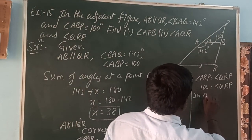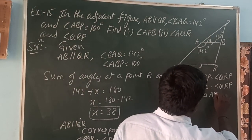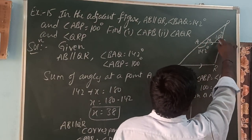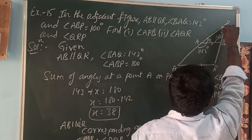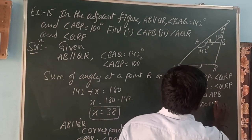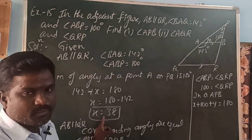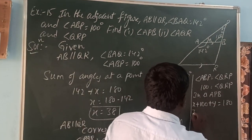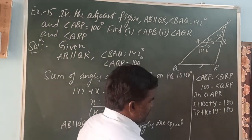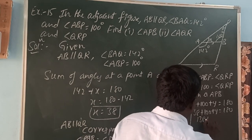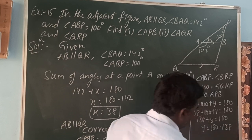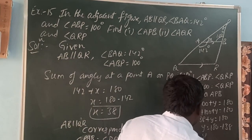In triangle APB, the sum of angles in a triangle is 180 degrees. The angles in triangle ABP are: angle ABP, angle PAB which is X equal to 38, and angle APB which we call Y. So, X plus 100 plus Y is equal to 180. Substituting X equals 38: 38 plus 100 plus Y equals 180, giving 138 plus Y equals 180. Therefore Y is equal to 180 minus 138, so Y is equal to 42 degrees.